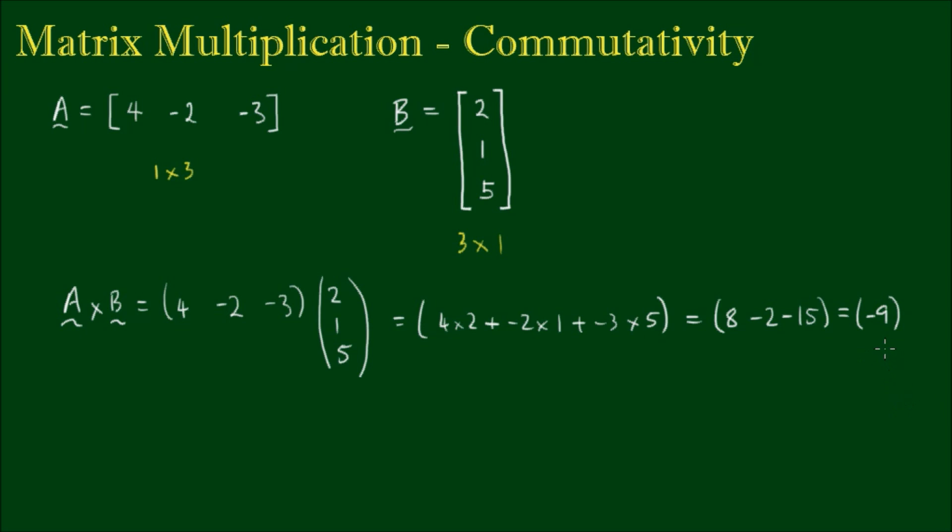Now this is a matrix with just one element in it, so it's really just a number. So we had a 1 by 3 matrix multiplied by a 3 by 1 matrix. The resultant matrix is a 1 by 1 matrix.